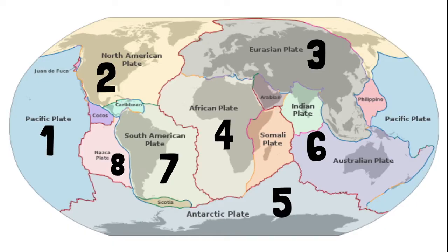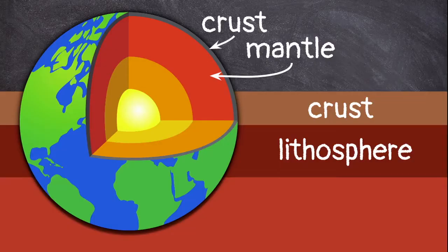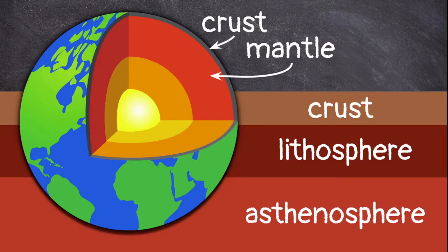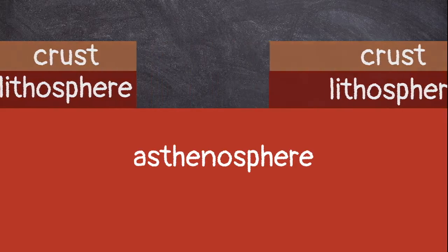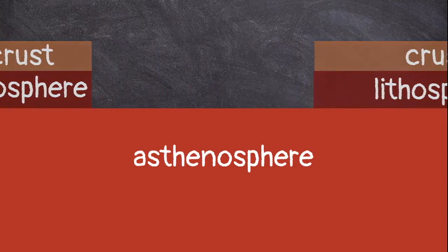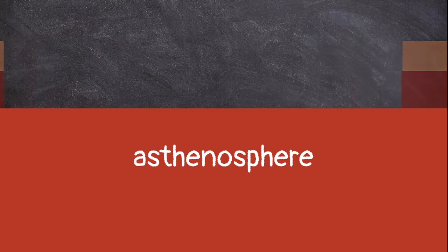These plates are floating on the next layer called the asthenosphere. The asthenosphere is made of molten, or melted, liquid rock. The pieces of rock that make up the lithosphere float around on the melted rock beneath them. The tectonic plates move very slowly, usually only a few centimeters each year.